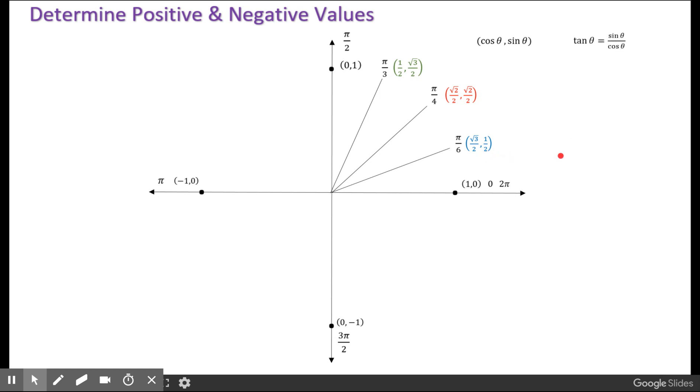The tangent is the sine over the cosine. Since all of these are just over 2, we can ignore the 2, and for pi over 6, the tangent would be, just using the numerator, the sine over the cosine, 1 over root 3.